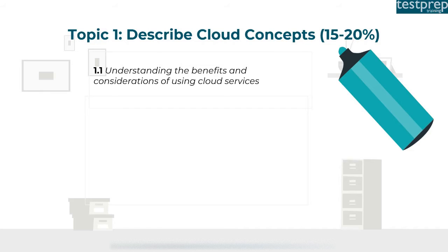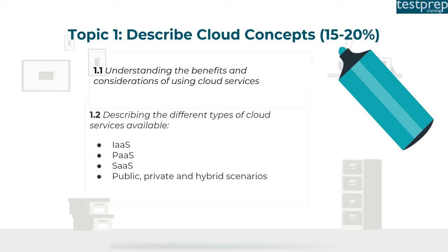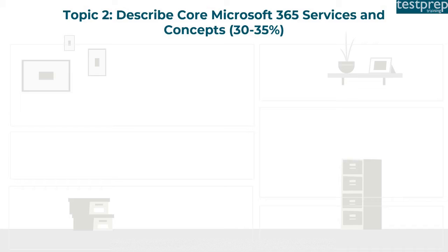Topic one covers cloud concepts at 15 to 20 percent weight. Number one: understanding the benefits and considerations of using cloud services. Number two: describing the different types of cloud services available, including infrastructure as a service, platform as a service, software as a service, and public, private, and hybrid scenarios.